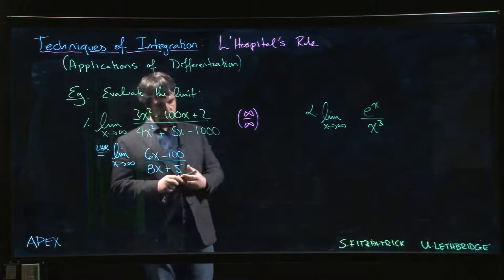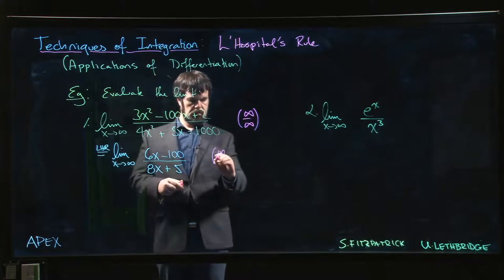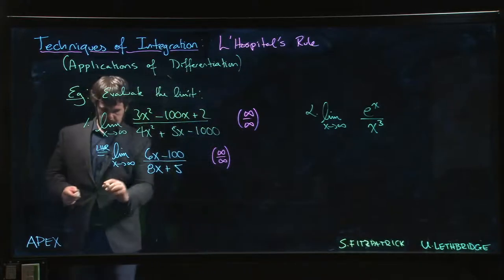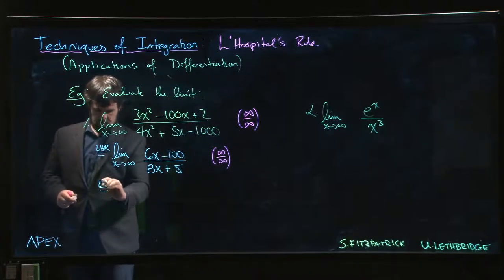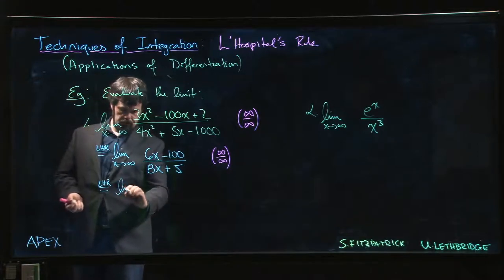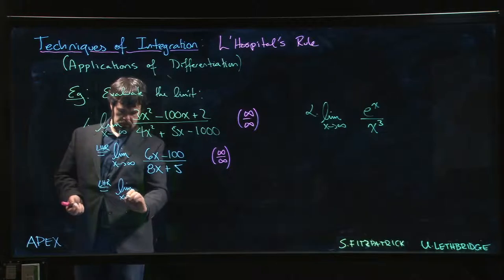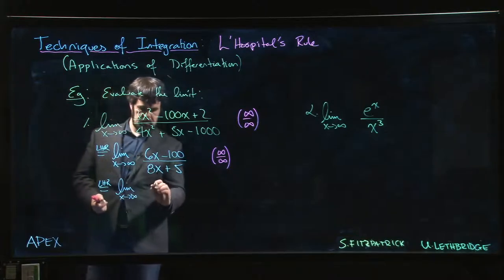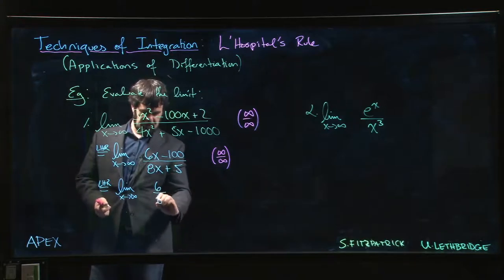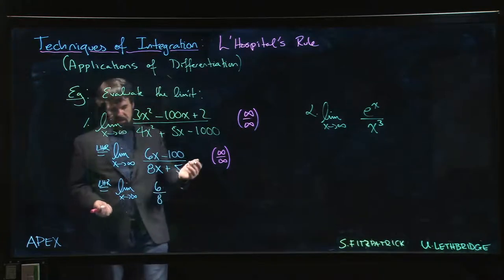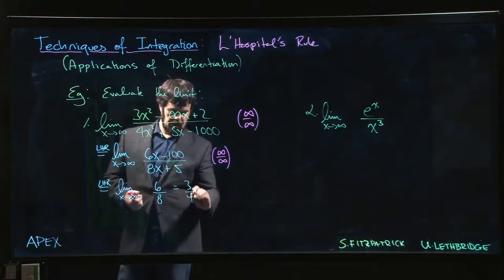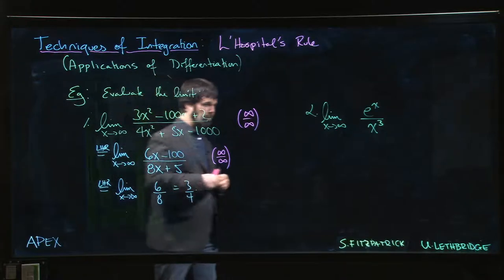Of course, it's still infinity over infinity, so apply L'Hopital's rule one more time. We get derivative of the top is just 6, derivative of the bottom is just 8. Okay, so we get the limit of 6 over 8, which is 6 over 8, or if you like, 3 quarters. But of course, we already knew that.